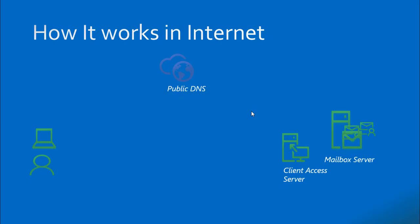When the user is in the corporate network, it follows a straightforward method and configuration completes in a minute. When a mailbox configuration request comes from the internet, it goes through a different connection process.